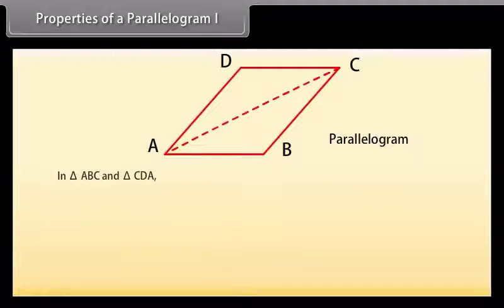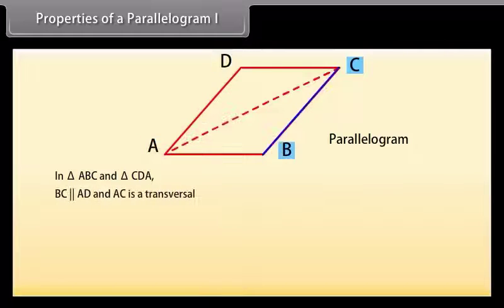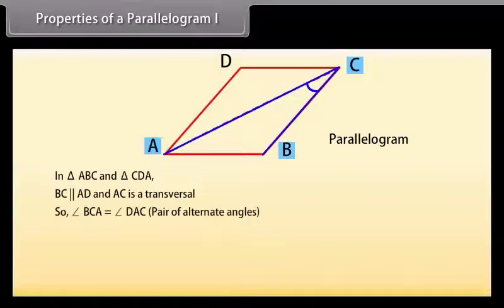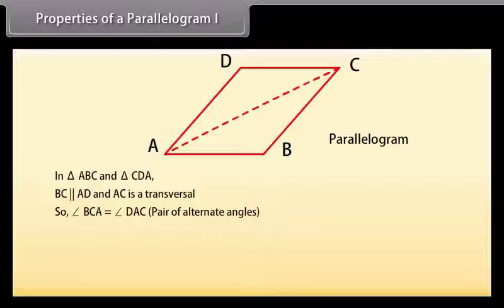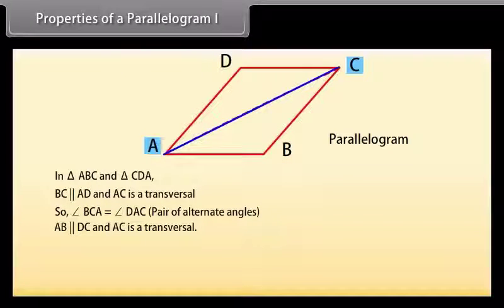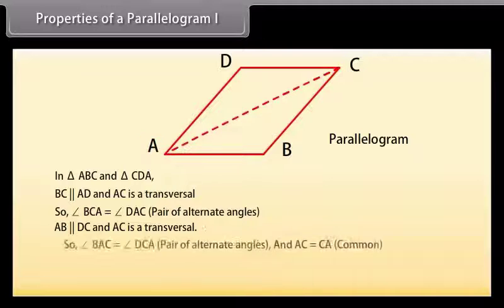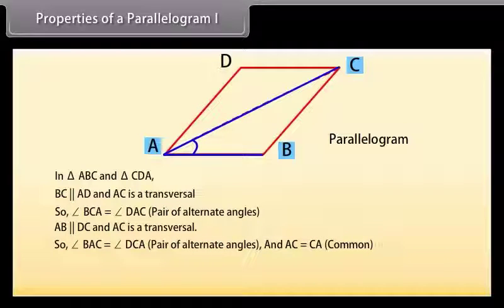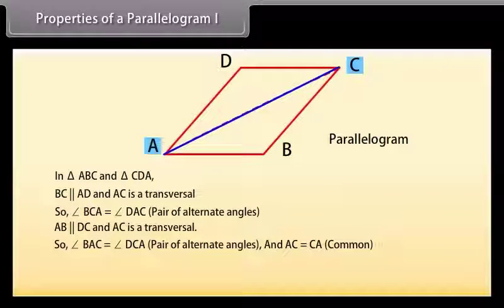We need to prove that triangle ABC and triangle CDA are congruent. In triangle ABC and triangle CDA: BC is parallel to AD and AC is a transversal, so angle BCA = angle DAC (alternate angles). Also AB is parallel to DC and AC is a transversal, so angle BAC = angle DCA (alternate angles). And AC = CA (common side).